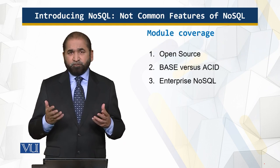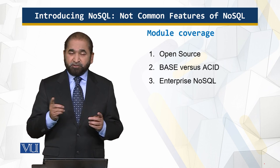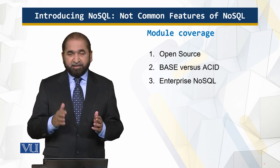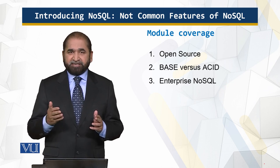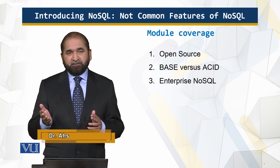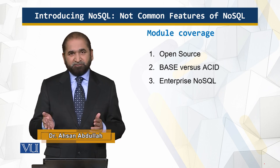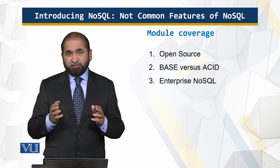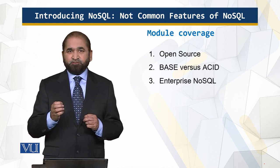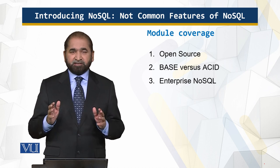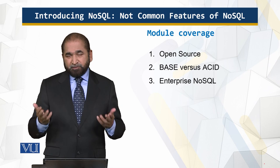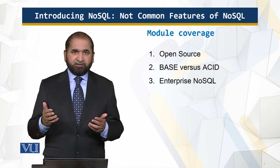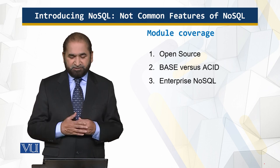This all started as open source and there are issues with open source vis-a-vis commercial organizations, which I will explain in this module. Then there is BASE versus ACID — this is not a chemistry course; ACID is an abbreviation which I will discuss. And then, what are the mission-critical features which enterprises are looking for in a NoSQL solution? Enterprise means a large multinational or global organization.